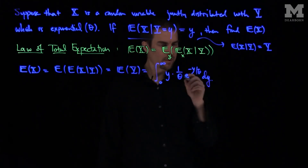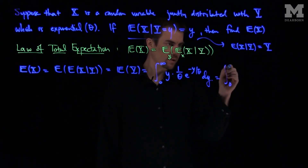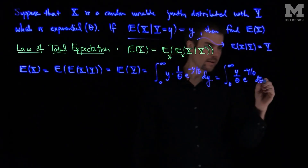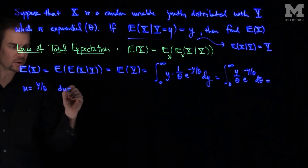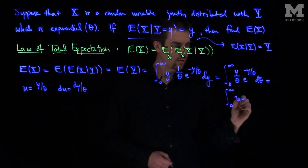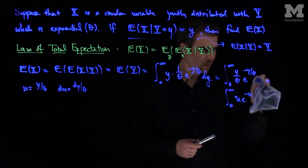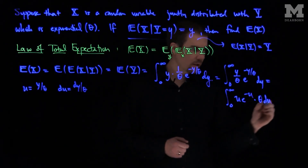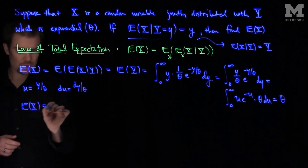This is just the expected value of an exponential random variable — the integral from zero to infinity of y over theta times e to the negative y over theta dy. Making the substitution u equals y over theta, so du equals dy over theta, we get the integral from zero to infinity of u times e to the negative u times theta du, which equals theta.